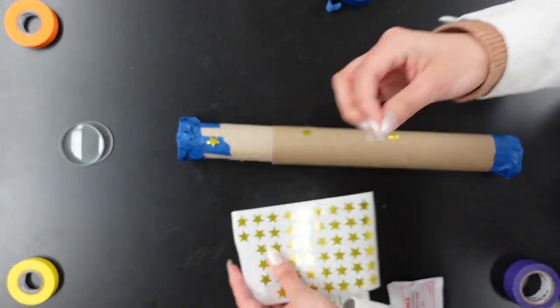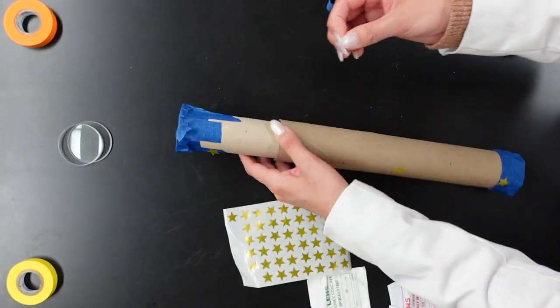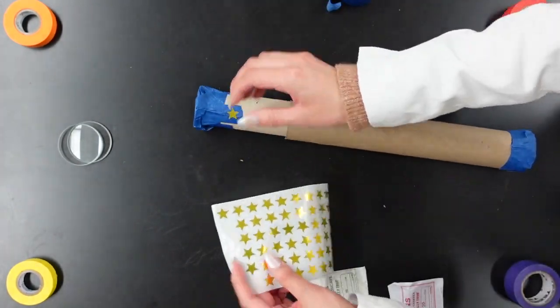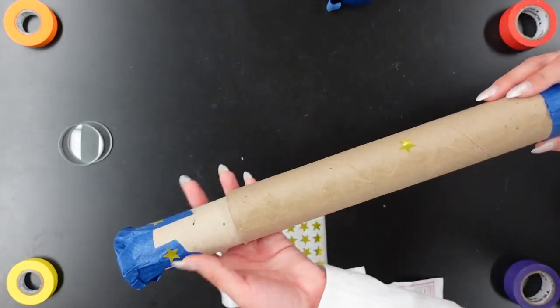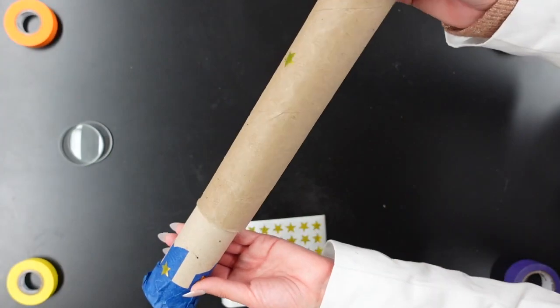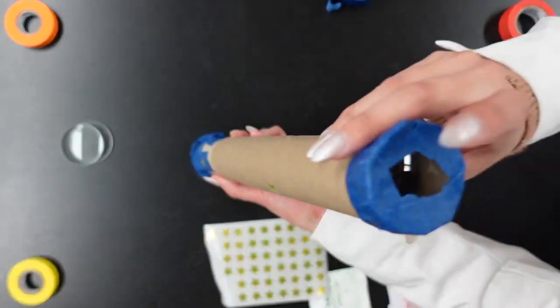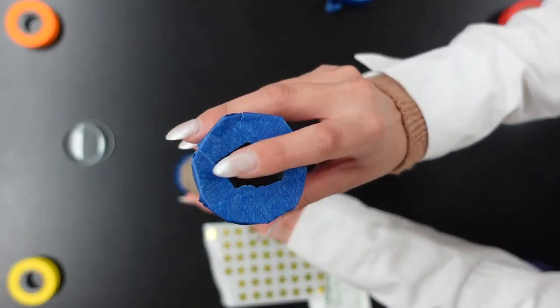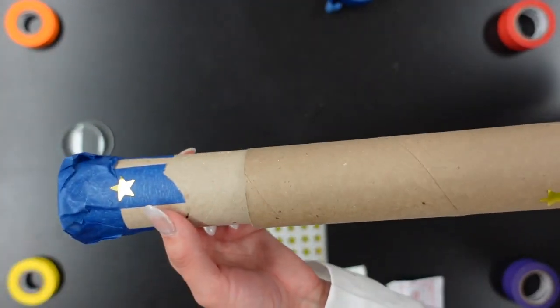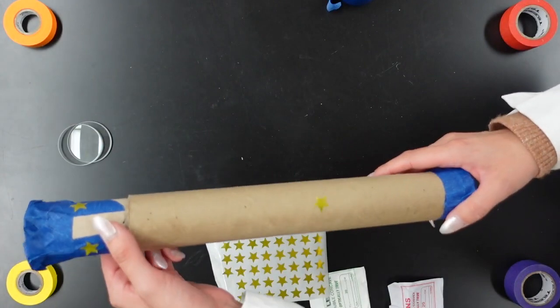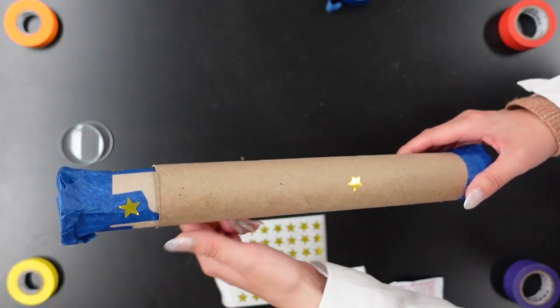So now remember the larger side with the larger paper towel roll is going to have the lens that you put your eye towards. So you're going to put your eye here and then you can see you can use this end to go in and out in order to better focus on what you're looking at. So this you're going to point towards the stars that you're interested in observing or the planets that you're interested in observing.